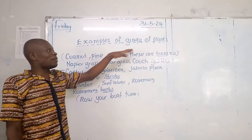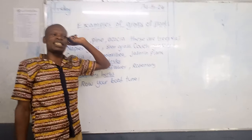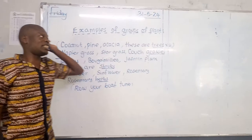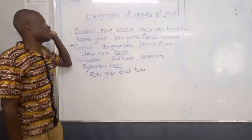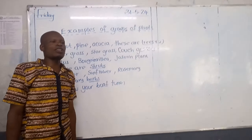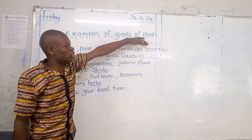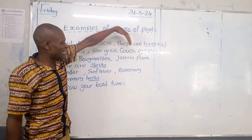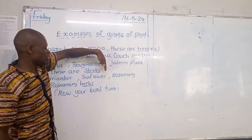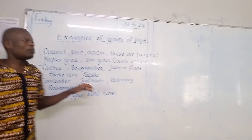Now, examples of a group of plants that we learned in science in grades 5 and 6. The plants have been divided into four groups. We have trees, grasses, shrubs, as well as herbs.